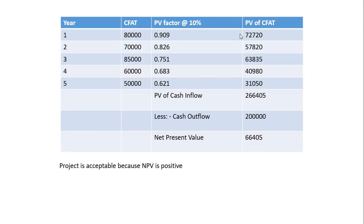The PV of cash flows is calculated by multiplying the future value with the PV factor. For year 1: 80,000 into 0.909 gives 72,720. Similarly for all figures up to the 5th year — 50,000 into 0.621 gives 31,050. The total present value of cash inflows is 2,66,405. Less cash outflow of 2,00,000, giving a net present value of 66,405. The project has a positive NPV — whenever inflows are greater than outflow, the project is acceptable.